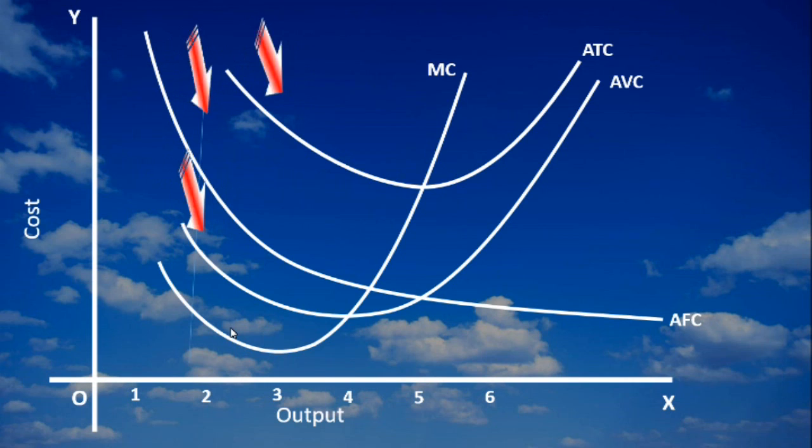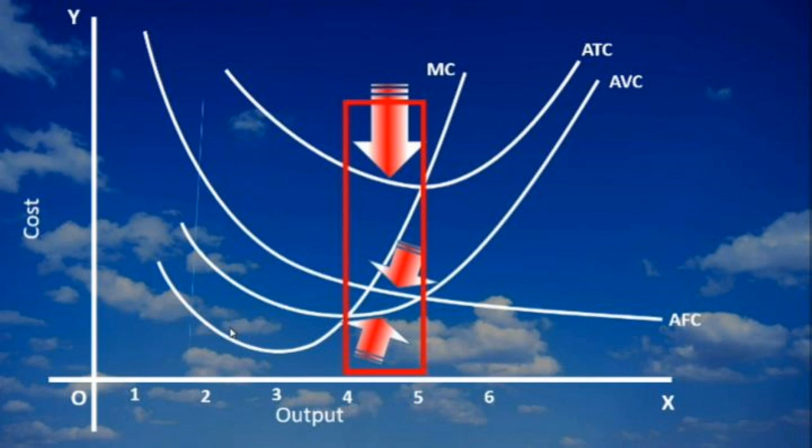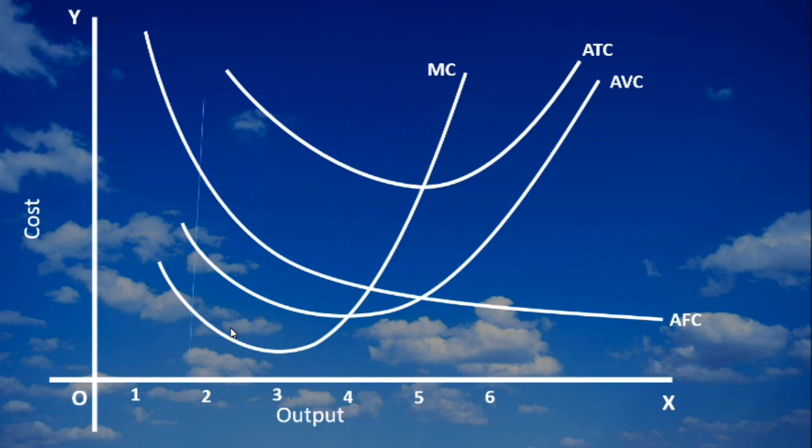Second relation. Beyond the minimum point, Average variable cost increases. But Average total cost continues to decline. Why? The reason is Average fixed cost falling. Moreover, the rate of fall of average fixed cost is greater than the rate of increase of average variable cost.